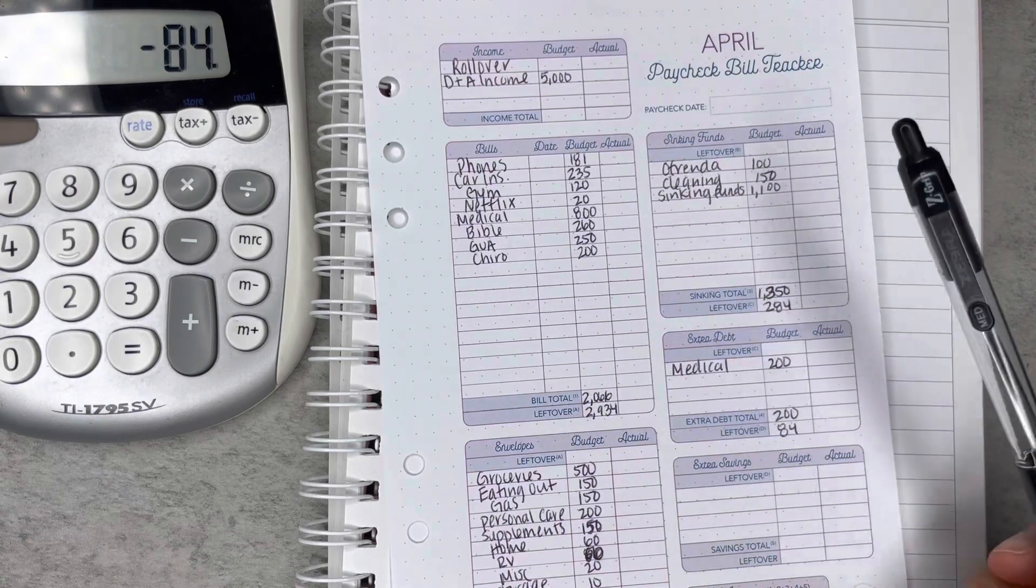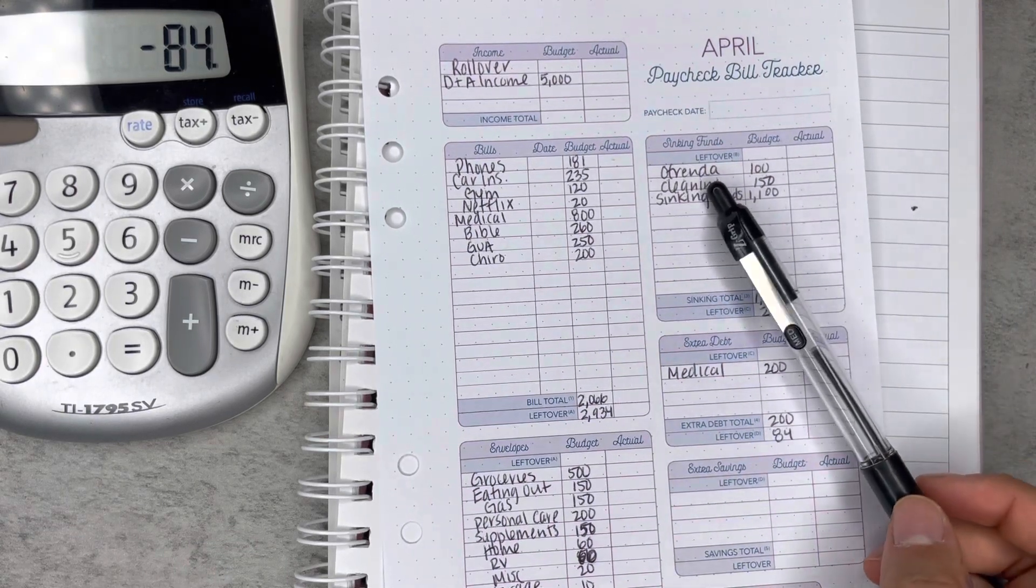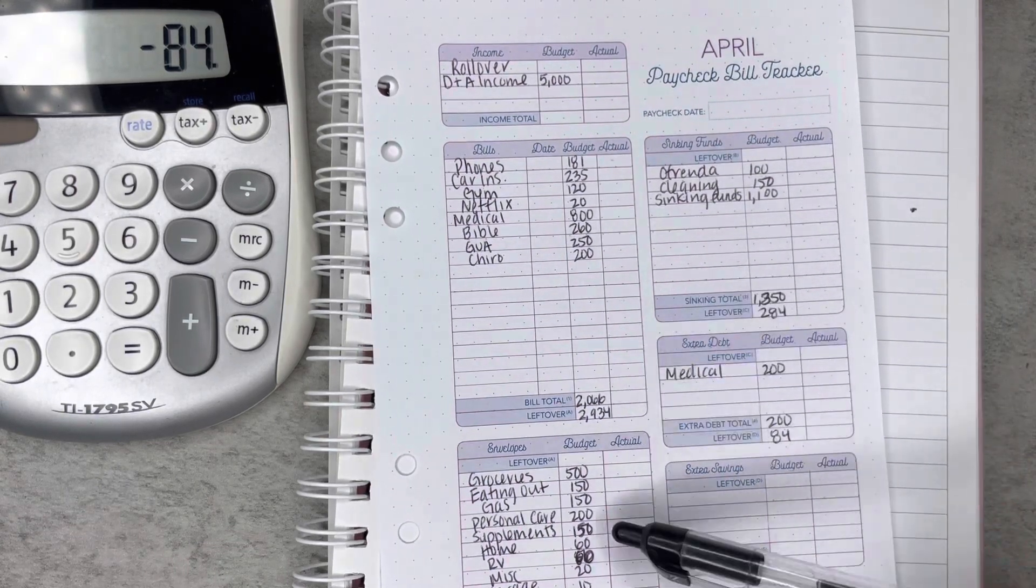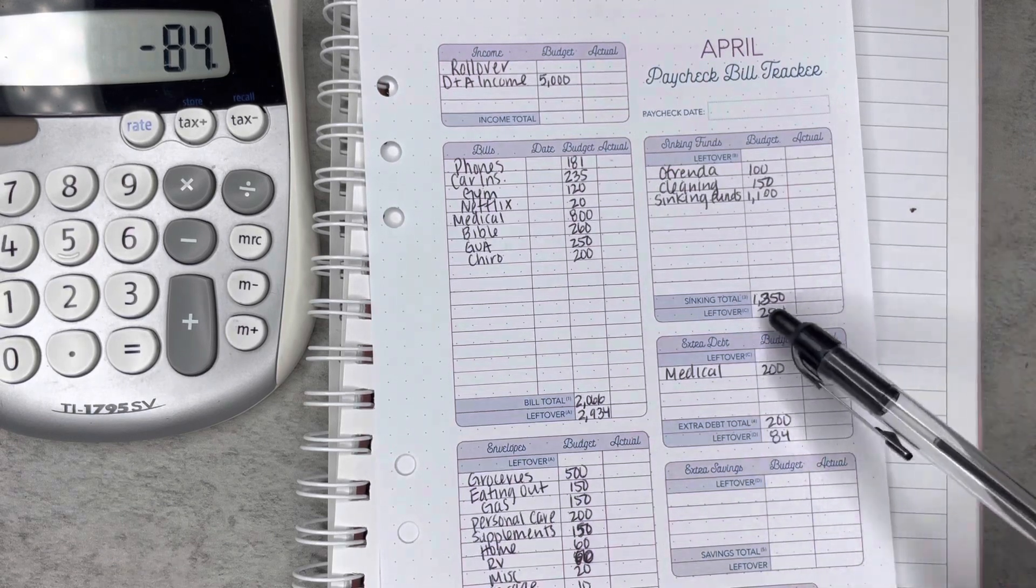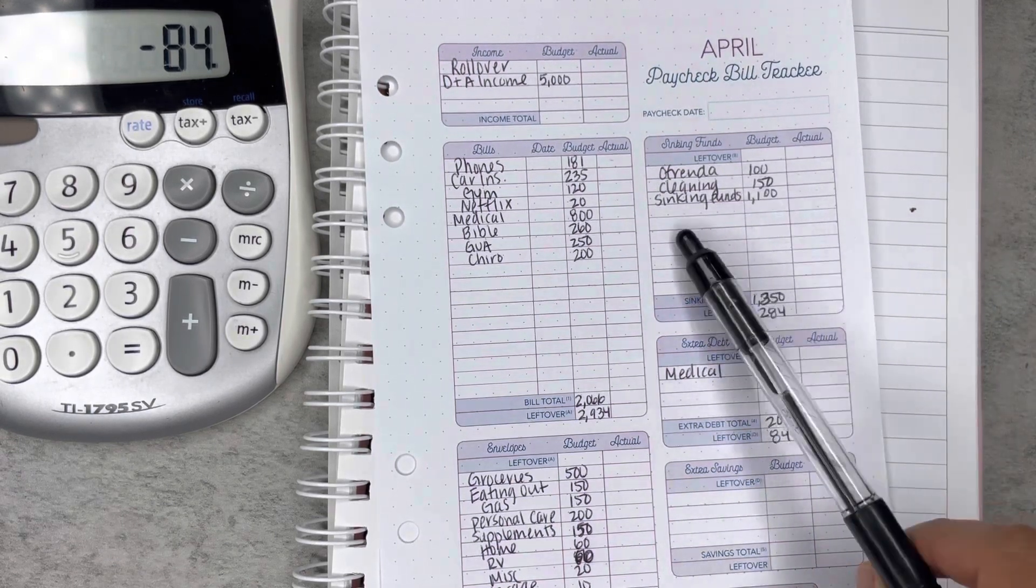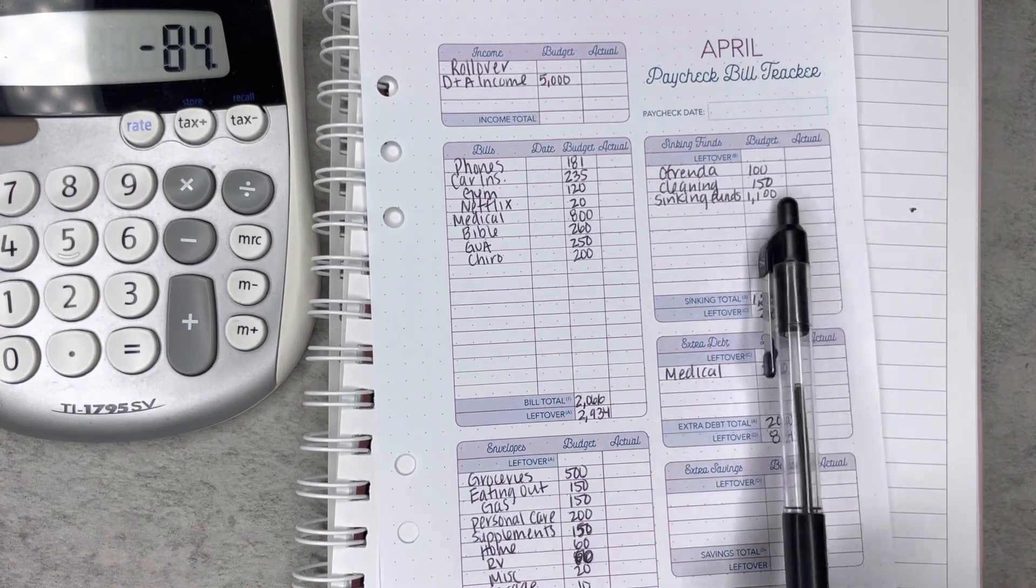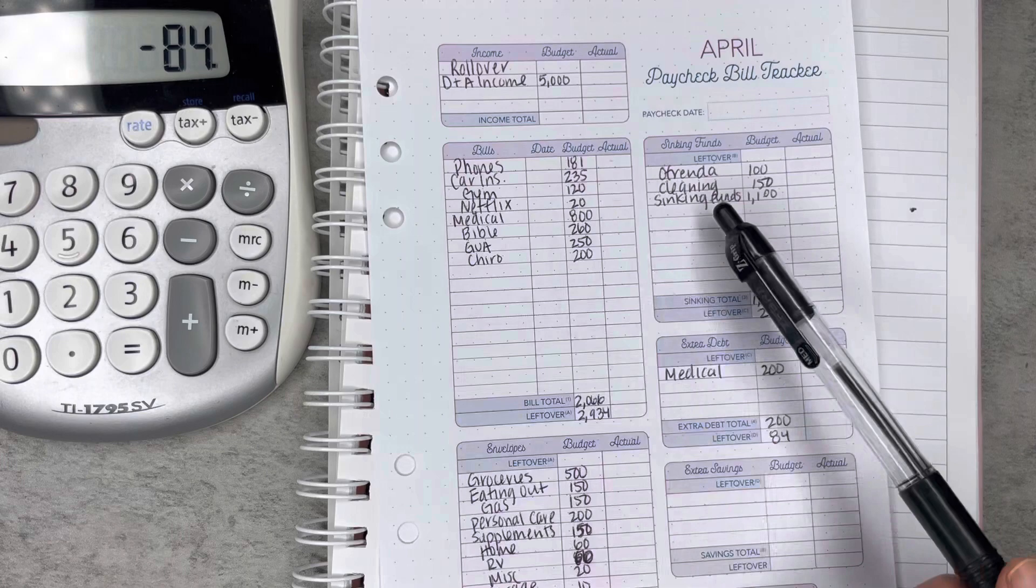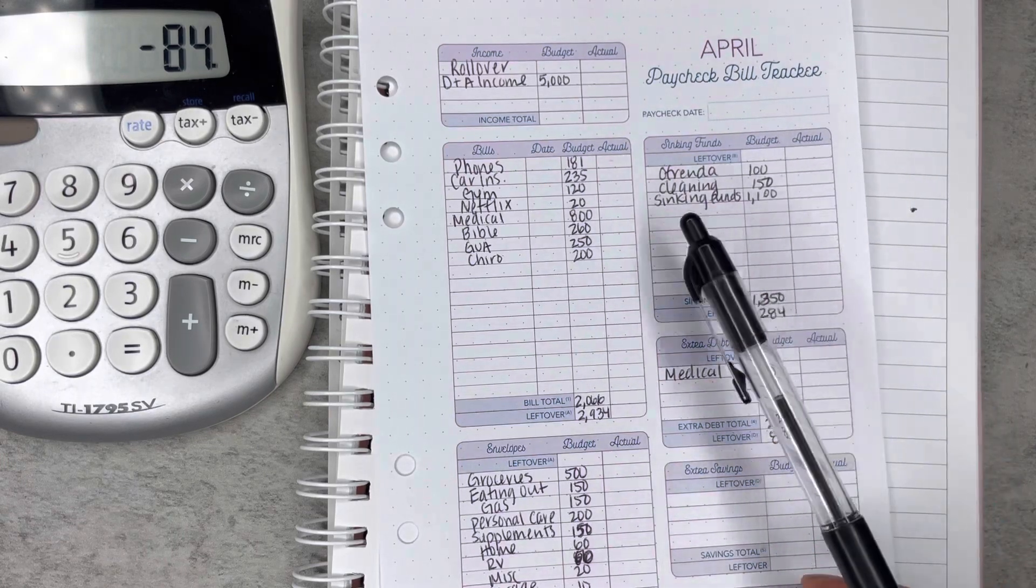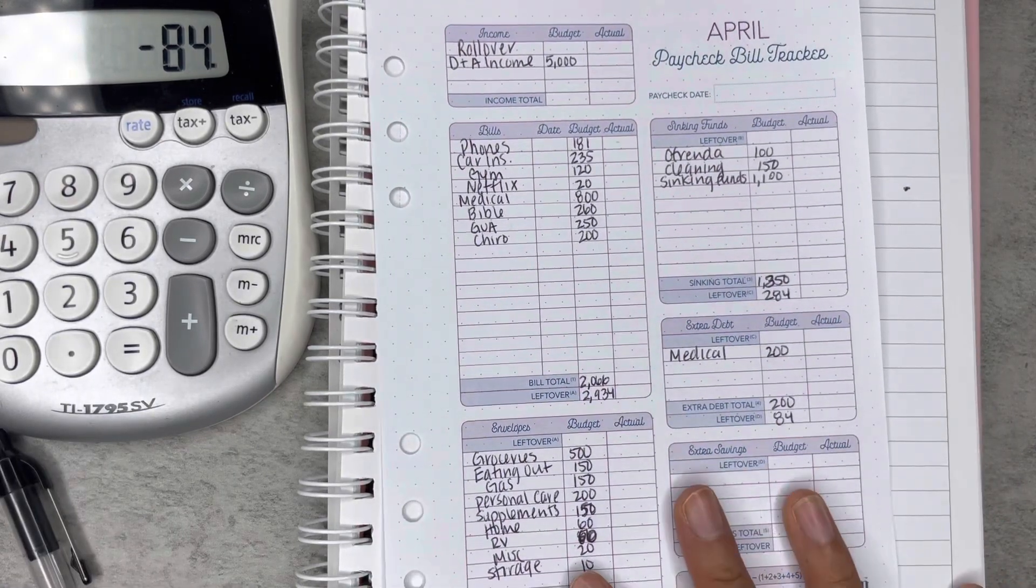Which is fine. I know it's not technically a zero-based for April. But yeah, we'll see how the sinking funds will allocate that. We haven't had a month where we had a little over $1,000 to use. So that will be nice. But yep, here is our budget for April.